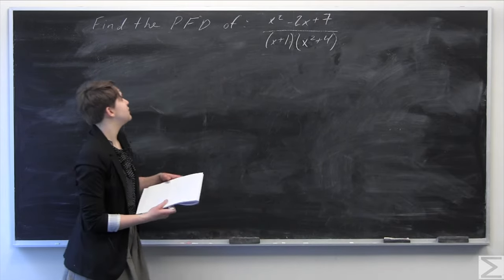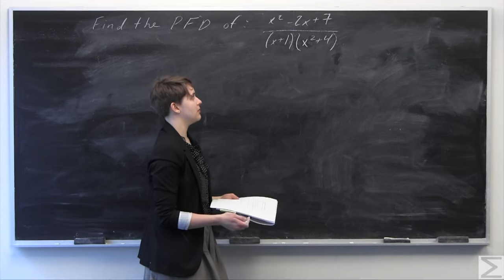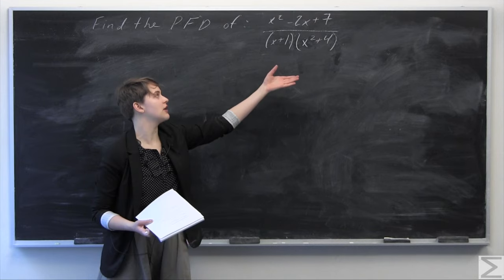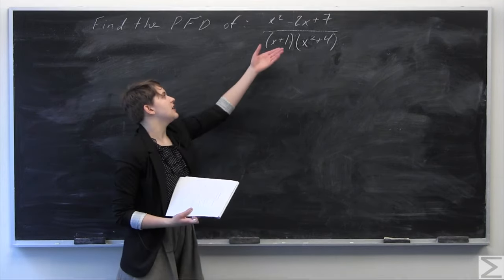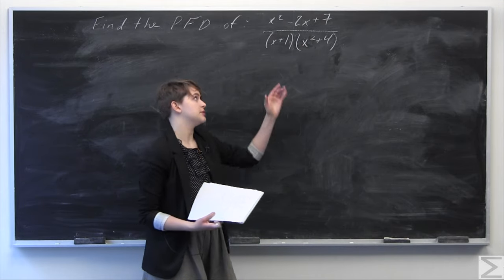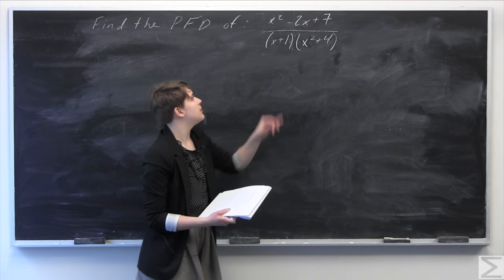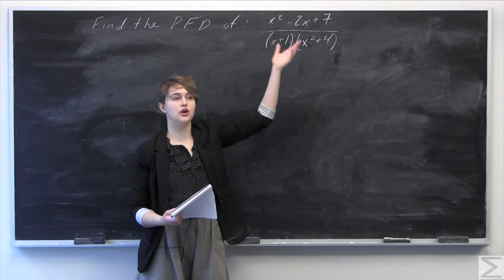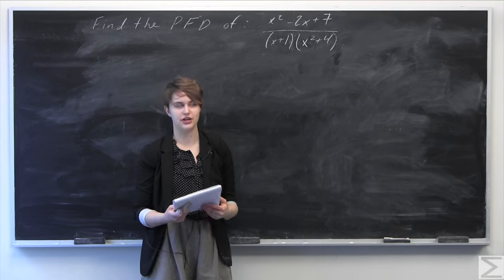This problem asks you to find the partial fraction decomposition of the following expression. We have x squared minus 2x plus 7 in the numerator, and then quantity x plus 1 times quantity x squared plus 4 in the denominator. The numerator can't be factored, so we're going to use partial fraction decomposition right away. The degree of the denominator is x cubed, which is greater than the degree of the numerator, so we don't need to do any polynomial long division. We can head right into the partial fraction decomposition.